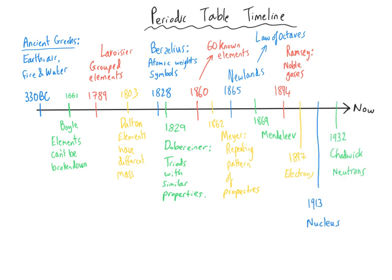In the last 100 years or so we've discovered even more about atoms through the discovery of subatomic particles. Electrons were discovered in 1897 by J.J. Thomson, then in 1913 Rutherford's gold leaf alpha particle scattering experiments discovered the nucleus, and in 1932 James Chadwick discovered neutrons. The discovery of these subatomic particles — particularly the neutron, which led to our understanding of isotopes — gave us enough evidence to reshape Mendeleev's periodic table in subtle ways that lead to the modern periodic table we use today.